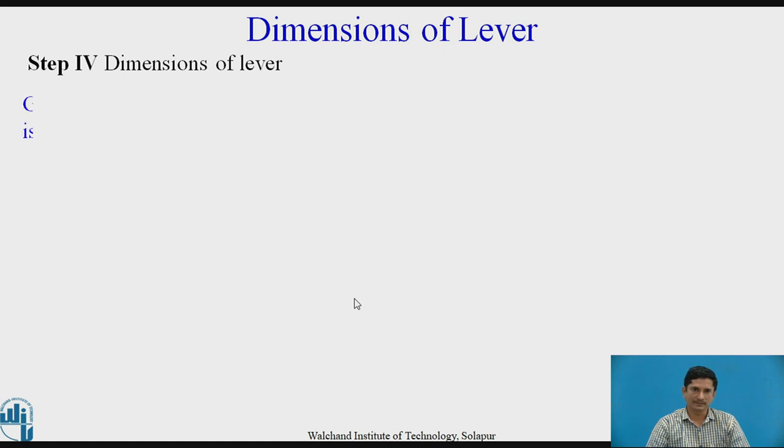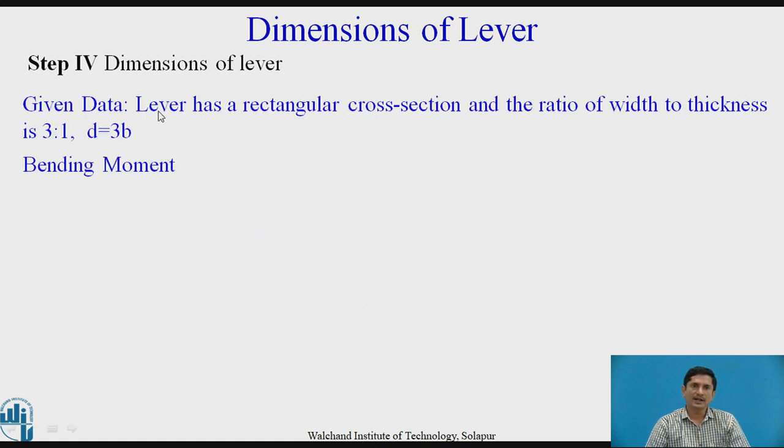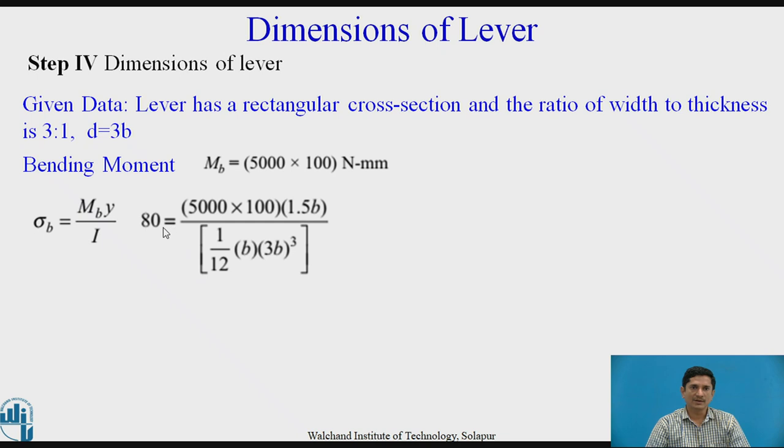Now dimensions of the lever. The given data is, lever has a rectangular cross section and the ratio of width to the thickness is 3 is to 1. Bending moment is given as bending moment equals 5000 into 100, that much Newton millimeter. We know that sigma B equals MB into Y by I. Sigma B permissible is 80. Moment is known. Width and depth are not known. Solving this equation, we can get B equals 17 millimeter. Approximately it is 16.9, let us take it as 17. And the D value is 3 times B, 51 millimeter.